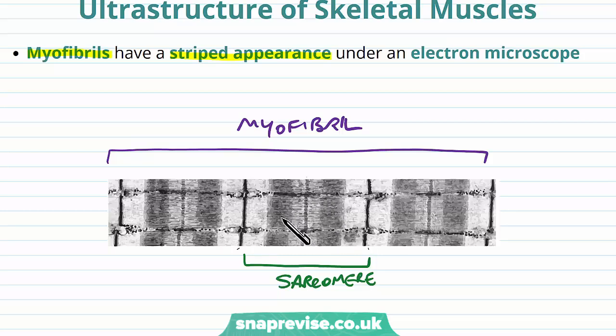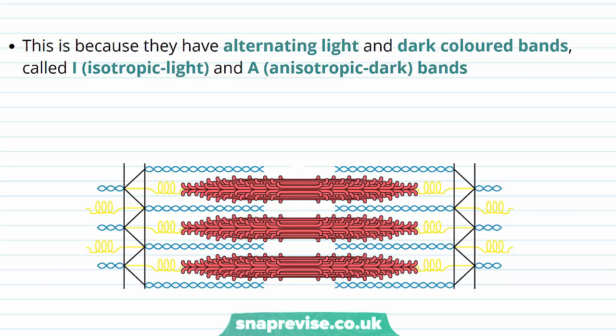And the pattern is very distinctive, and we'll talk about how the different proteins of actin and myosin make up these patterns. The reason they look like this is because they have these alternating lighter and darker coloured bands. And they're called the I, or isotropic light band, and the A, anisotropic or dark band.